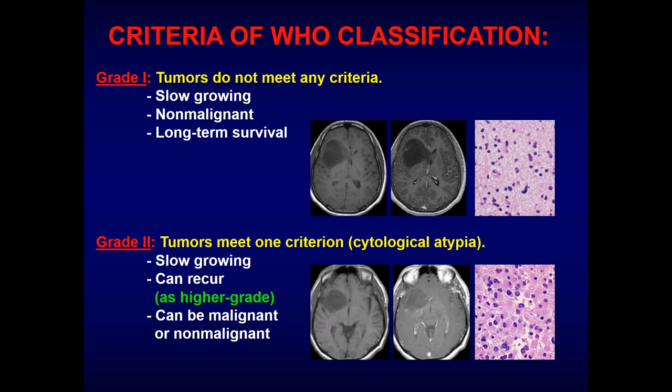This is a case of a grade 1 neoplasm where there is a frontal white matter subcortical area of mass with mass effect, a narrow zone of transition, no peritumoral edema, and absolutely no enhancement. In histology, blue means bad and pink means good — as the blue increases, the tumor becomes more aggressive. Here, the blue is outnumbered by the pink, confirming this is a relatively lower grade neoplasm.